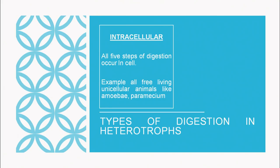Examples of intracellular digestion are amoeba and paramecium, which are protozoans. Any free-living unicellular organism shows intracellular digestion, because they are unicellular and all the life processes are taken care of by that particular cell.